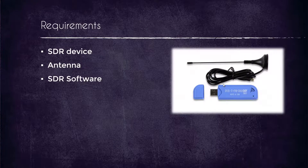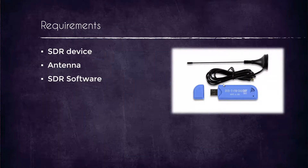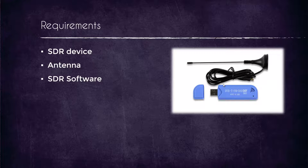This is what an SDR device looks like. The SDR device comes with a basic antenna and the SDR software, which we are going to see in our future lectures. We are also going to see SDR devices and antennas — all those things in our coming lectures.